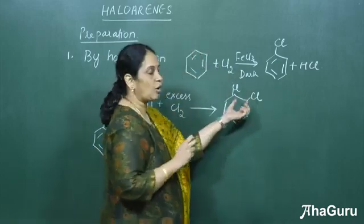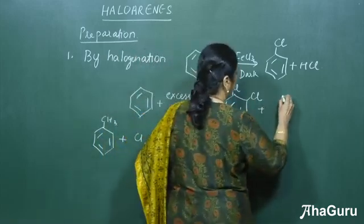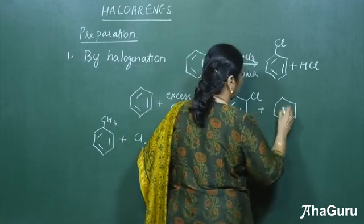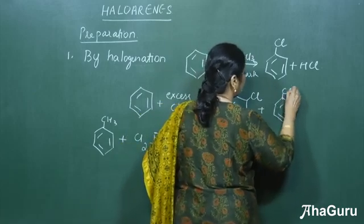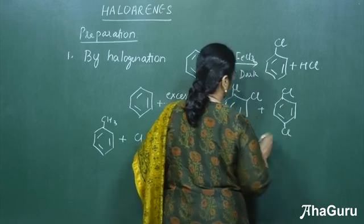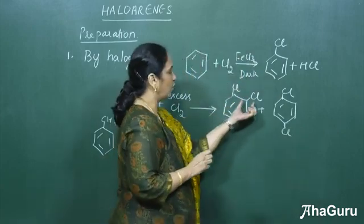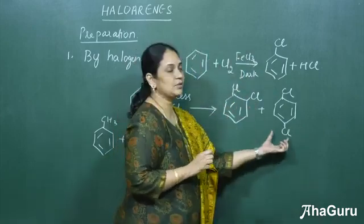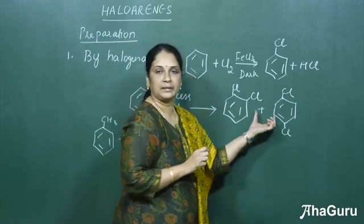Both in the ortho position and in the para position. Because chlorine as we know is an ortho-para directing group. This will be ortho-chloro-chlorobenzene. This will be para-chloro-dichlorobenzene.